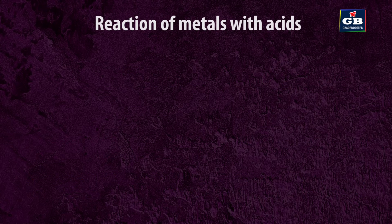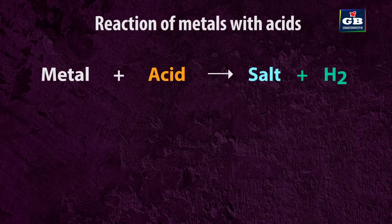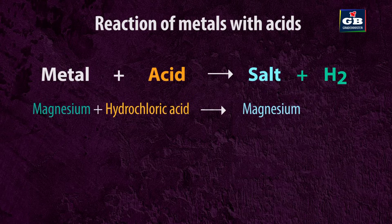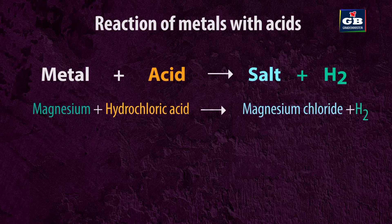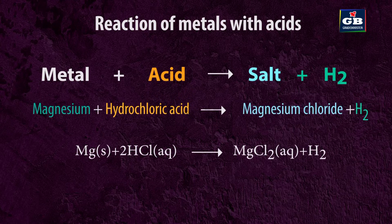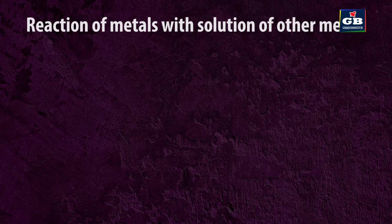Reaction of metals with acids: Metals react with acids to give a salt and hydrogen gas. For example, magnesium + hydrochloric acid → magnesium chloride + hydrogen gas: Mg + 2HCl → MgCl₂ + H₂. So, metal + dilute acid → salt + hydrogen.